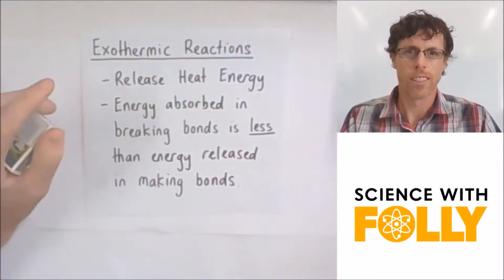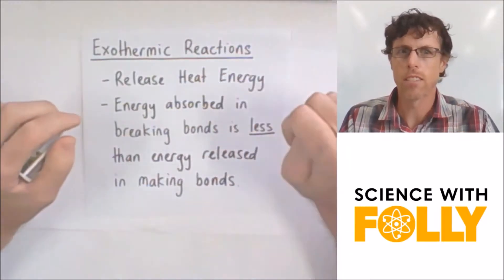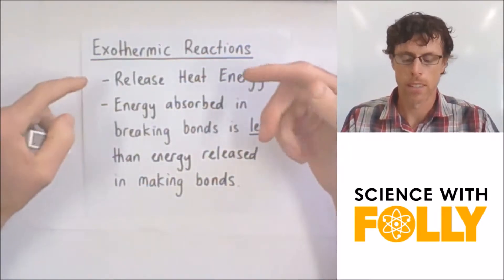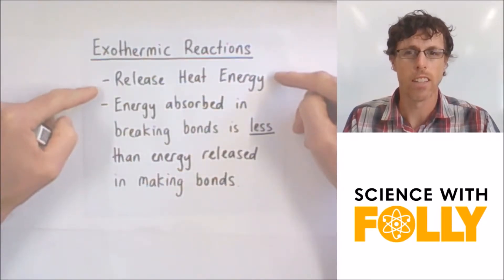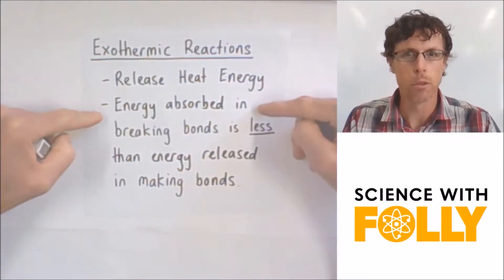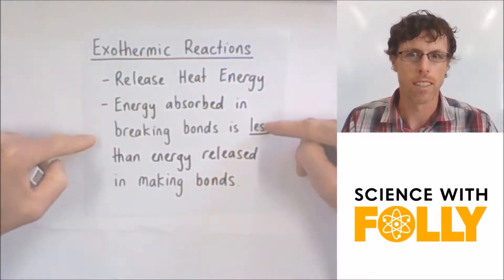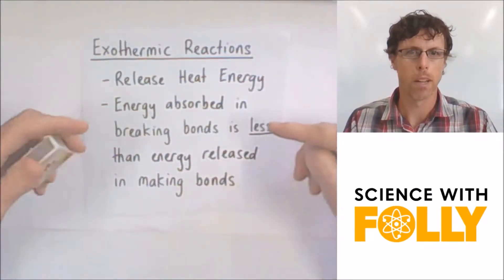Now looking at energy changes in chemical reactions, we've got two kinds of chemical reactions we need to know about. Exothermic reactions release heat energy, and that's because the energy absorbed in breaking the bonds is less than the energy released in making the bonds.